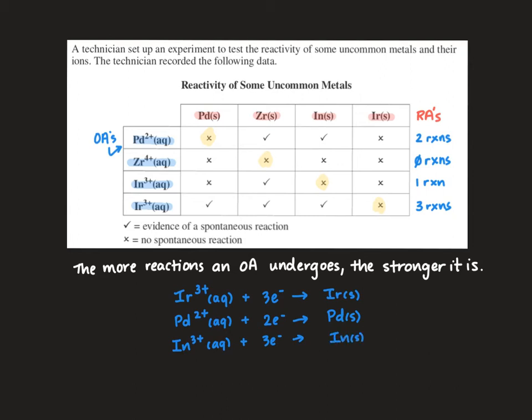And lastly we will have zirconium 4+ which didn't react with anything making it our weakest oxidizing agent. It will gain four electrons to form zirconium solid.